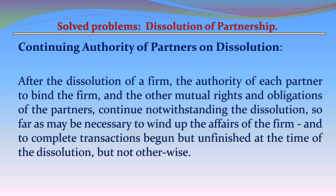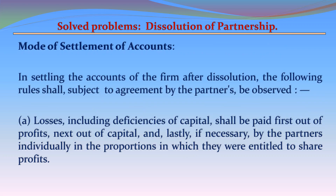Continuing authority of partners on dissolution. After the dissolution of a firm, the authority of each partner to bind the firm and the other mutual rights and obligations of the partners continue notwithstanding the dissolution, so far as may be necessary to wind up the affairs of the firm and to complete transactions begun but unfinished at the time of dissolution.